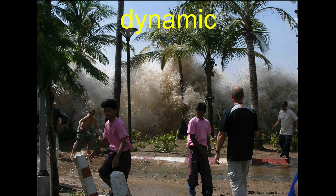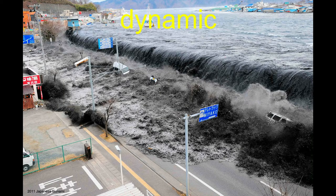The coast tends to be very dynamic. These are extreme examples — the tsunami coming on shore in Indonesia in 2004, with tremendous power and tremendous movement of water. Same thing in Japan in 2011 with the Japanese earthquake and subsequent tsunami.